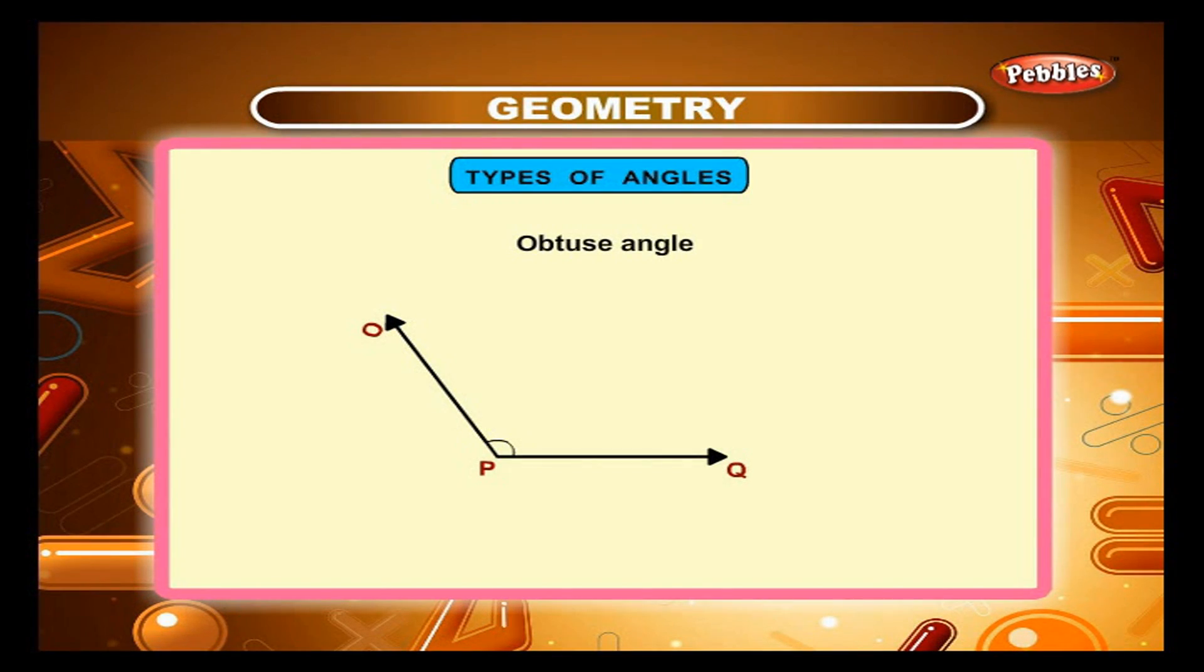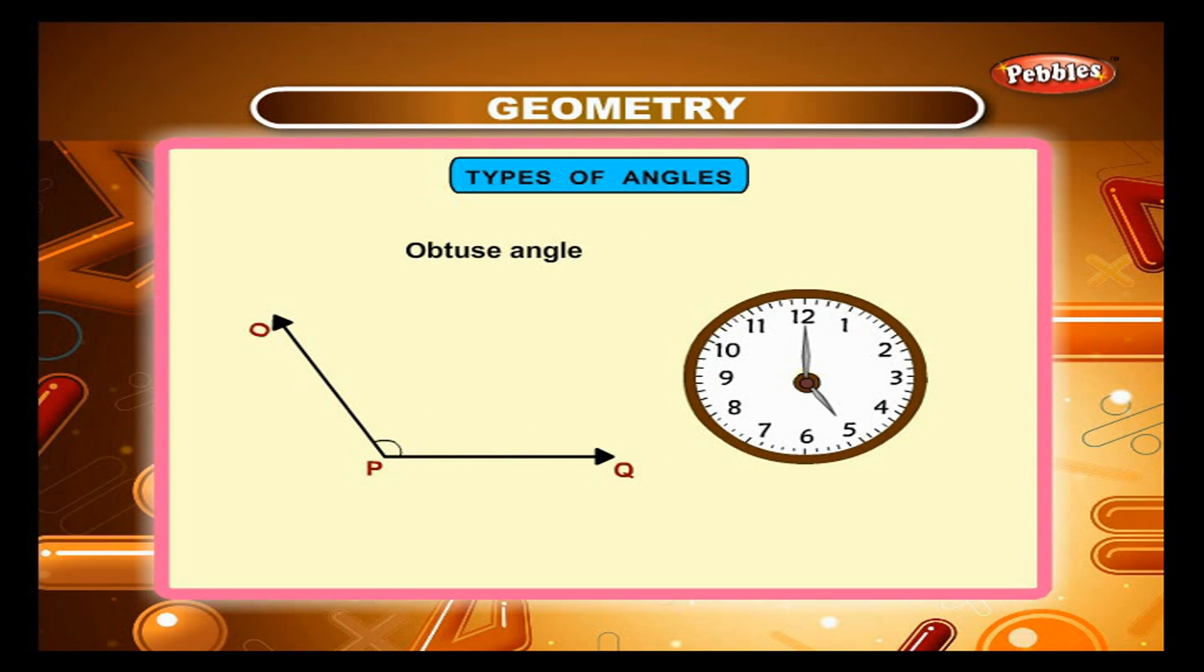An obtuse angle measures between 90 degree and 180 degree. It is greater than a right angle. The hands of the clock make an obtuse angle at 5 o'clock.